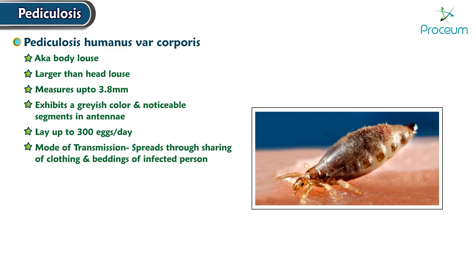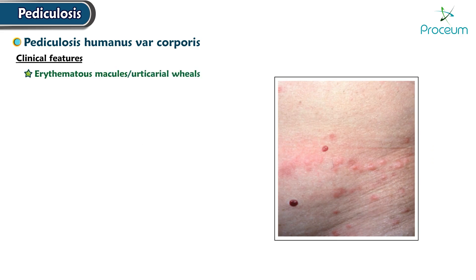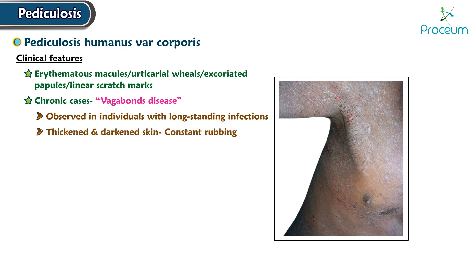In cases of body louse infestation, clinical features include erythematous macules, urticarial wheals, excoriated papules, and linear scratch marks. Chronic cases may manifest a condition known as Vagabond's disease, particularly observed in individuals with long-standing infections. It characteristically shows thickened and darkened skin due to constant rubbing and, in some instances, may lead to post-inflammatory hyperpigmentation.